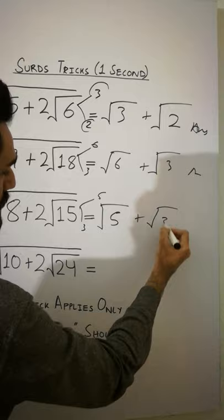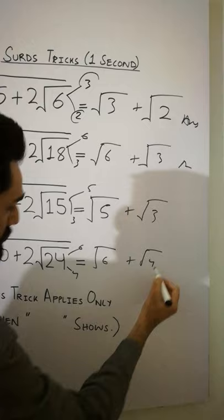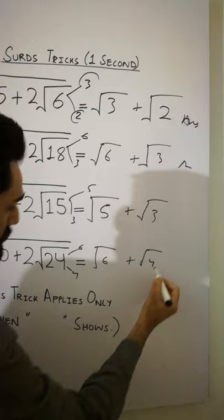And similarly, right here, six times four is twenty-four, six plus four. This trick applies only when shows here plus two. Thanks for watching and must subscribe.